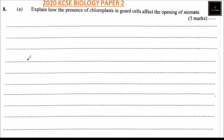This is question number eight, part A. We are told to explain how the presence of chloroplasts in guard cells affects the opening of stomata. You can answer this question by saying: